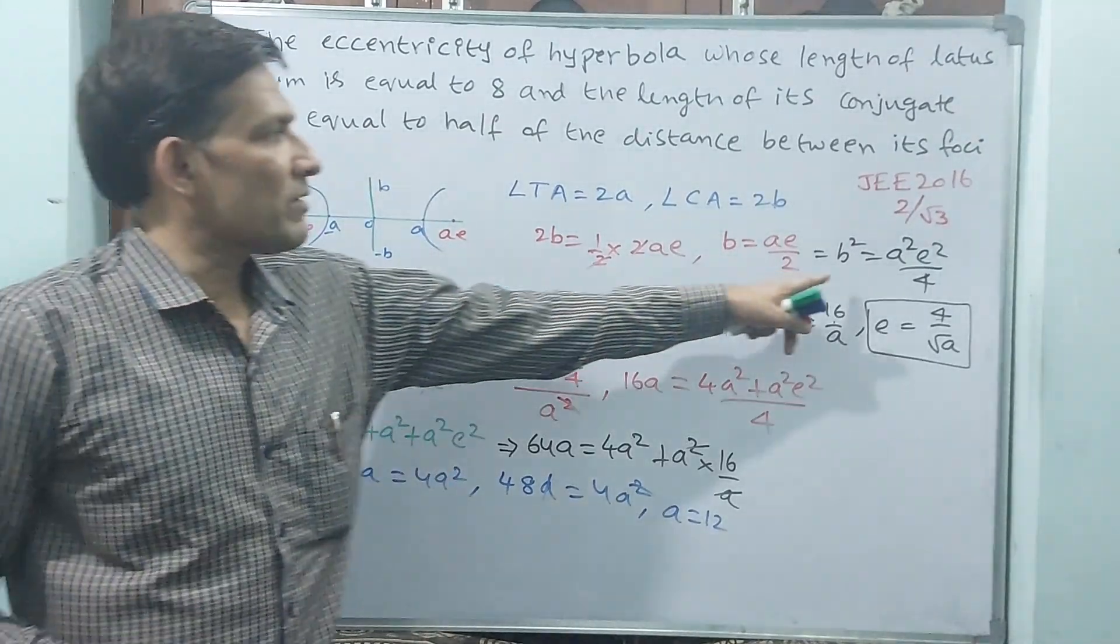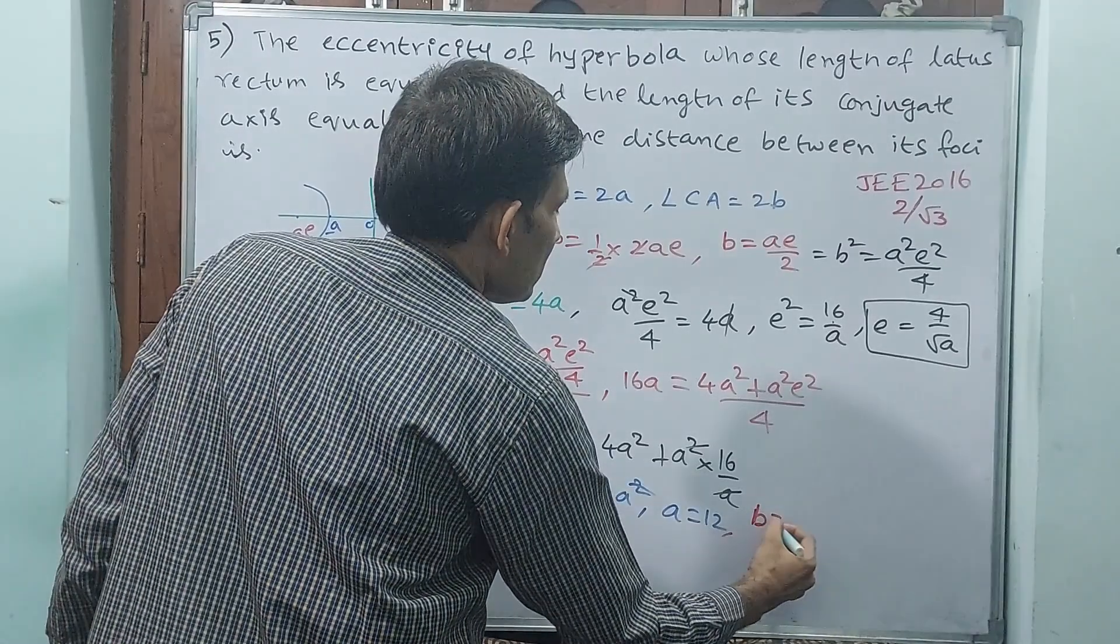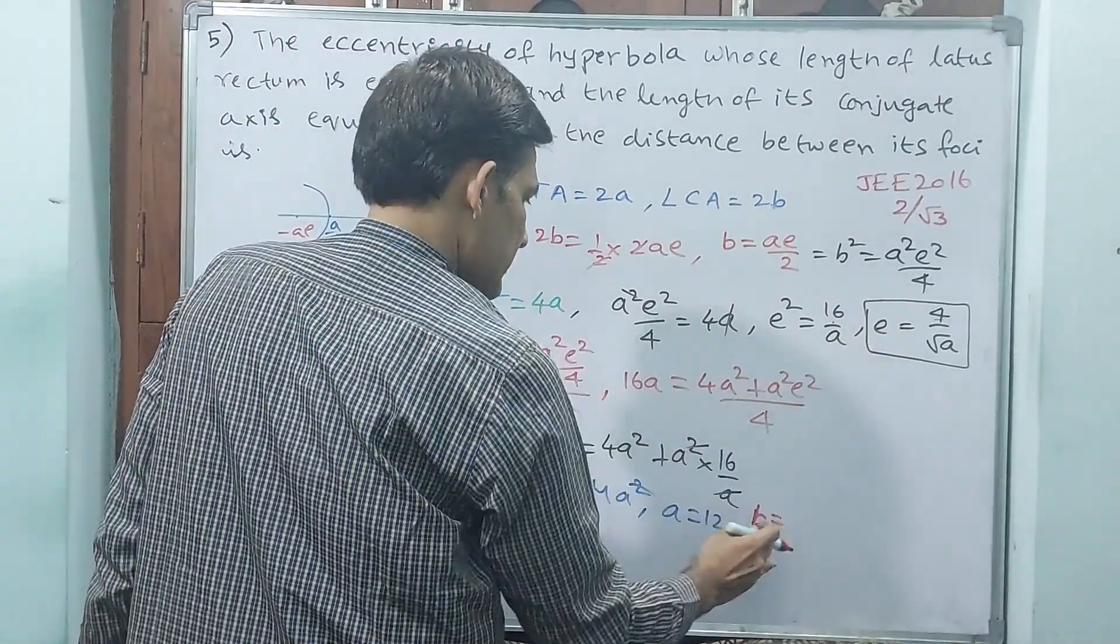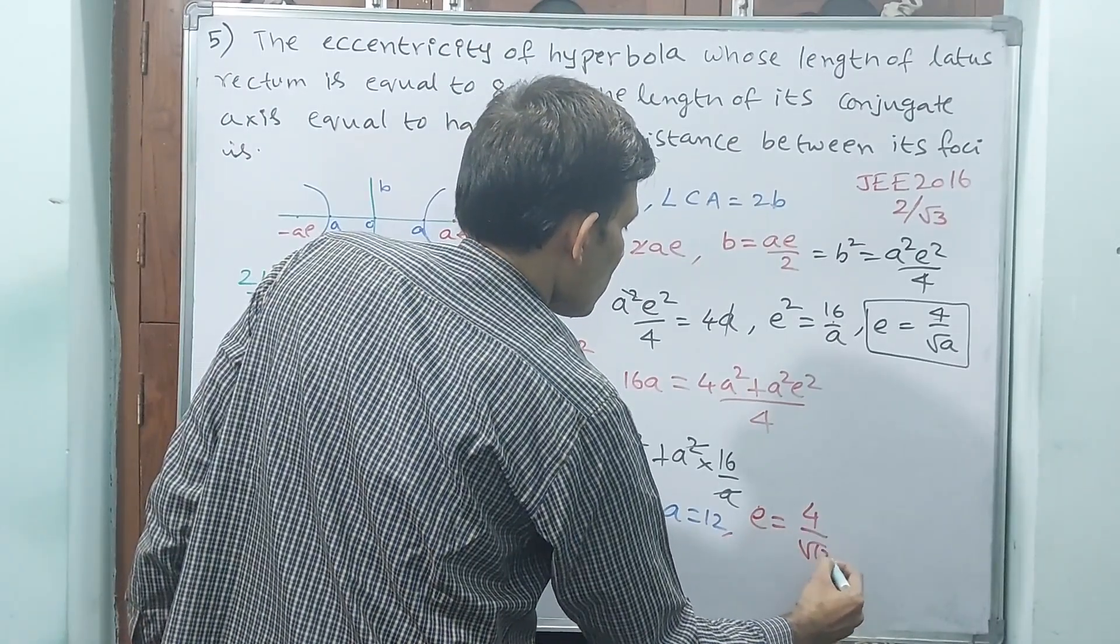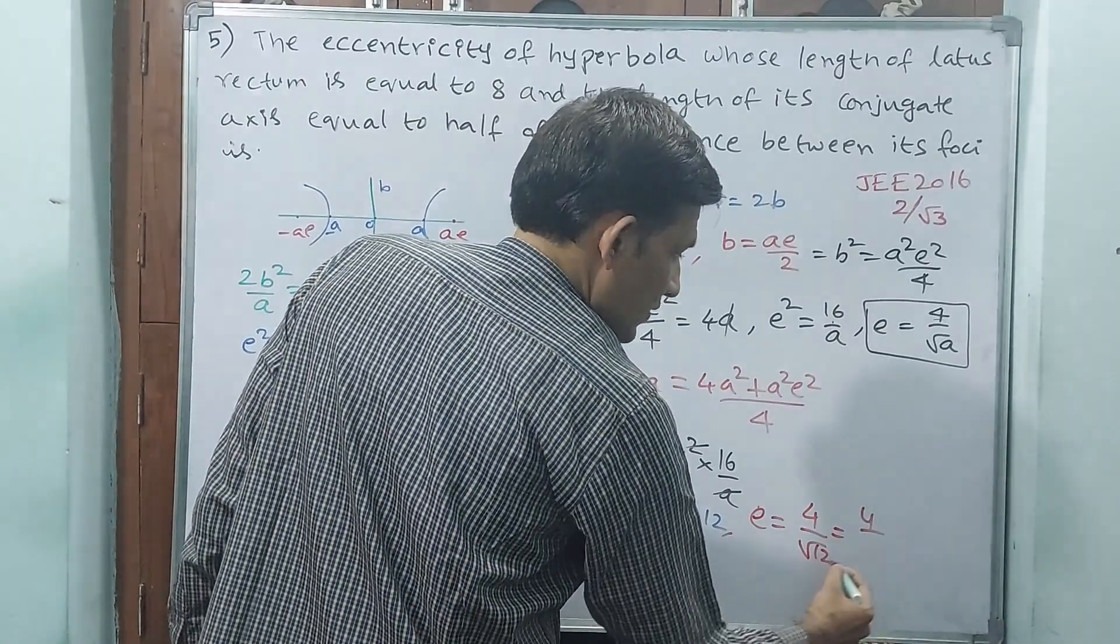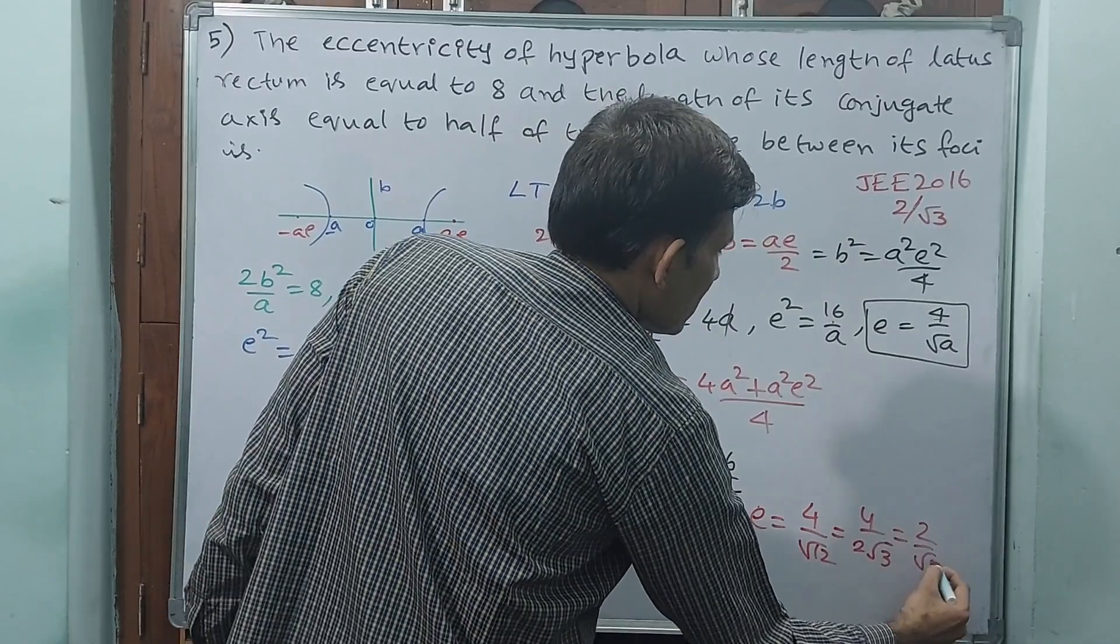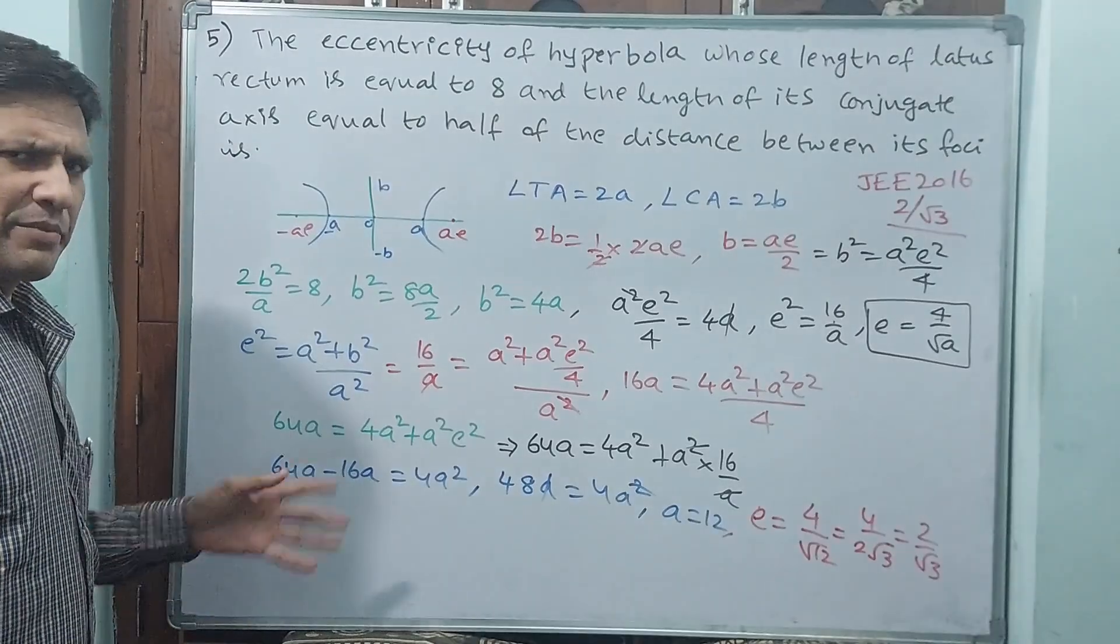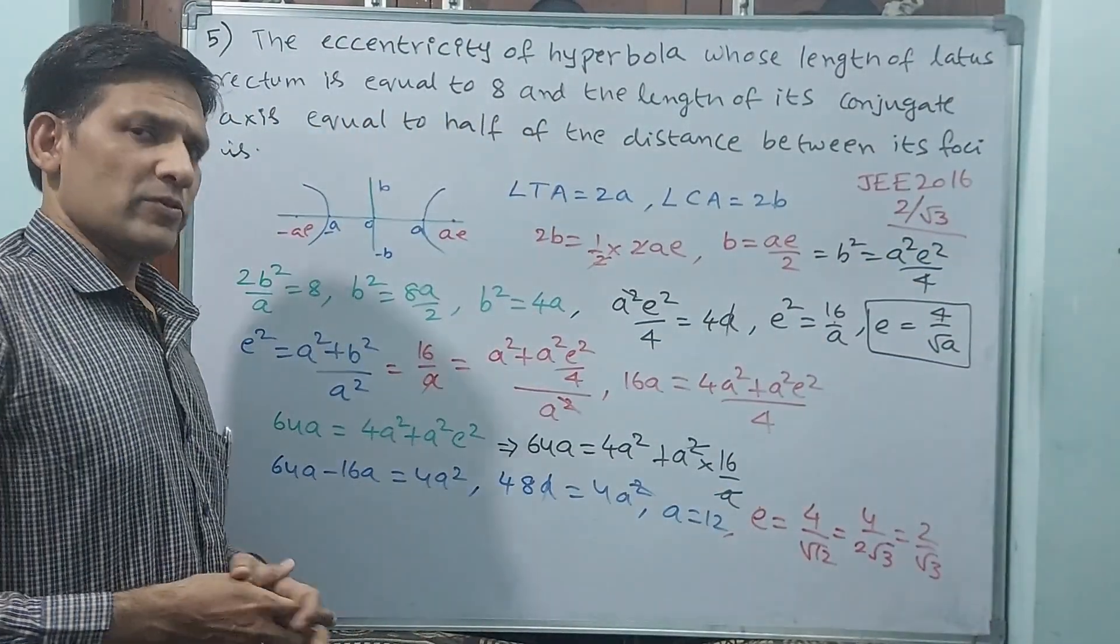A is equal to 12. Then E is equal to 4 by root 12. That is equal to 4 by 2 root 3, which is 2 by root 3. They are asking eccentricity, so we need not find B. E is 2 by root 3. Let us go for next question.